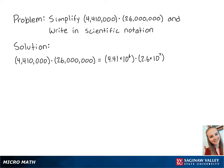Next, we're going to rearrange the numbers in similar groups. We're going to group together 4.41 and 2.6, and then 10 to the 6th and 10 to the 7th.